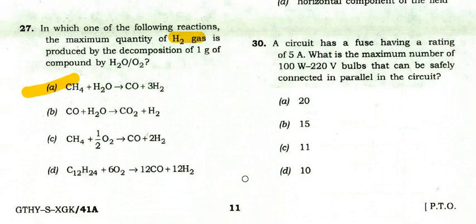A circuit has a fuse rated at 5 amperes. What is the maximum number of 100-watt, 220-volt bulbs that can be safely connected in parallel in the circuit? The right option is C: 11.